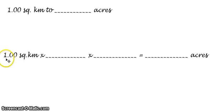So again, we always start with our given. So our given is 1.00 square kilometers and we need to convert that into the corresponding amount in acres. As you can see, you now have two blanks here, meaning that we need at least two conversion factors.